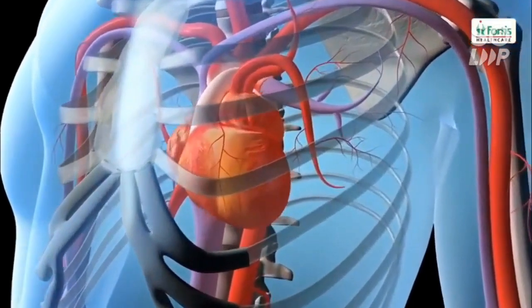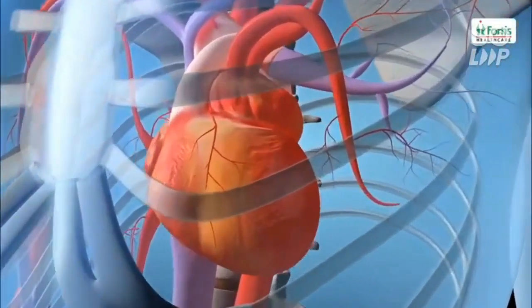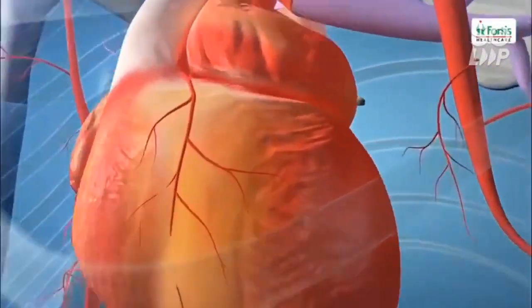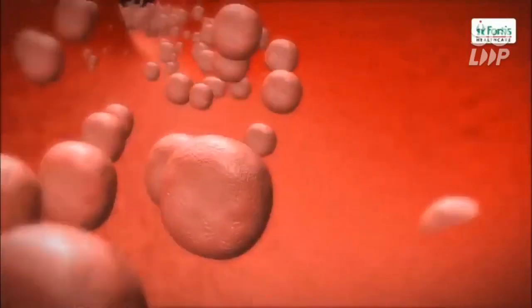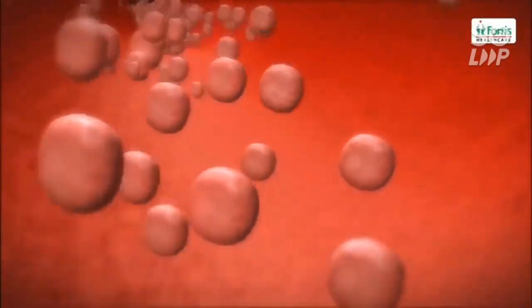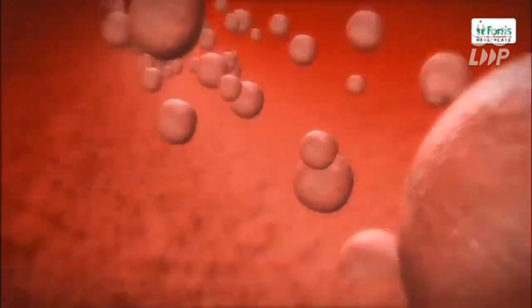There are 2 coronary arteries. These are the coronary veins and the coronary arteries. They carry purified, oxygenated blood to the heart muscle.